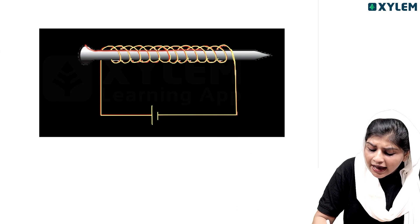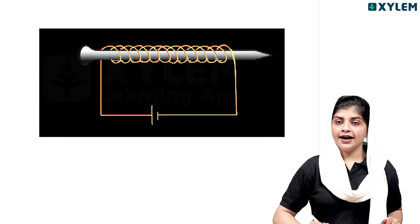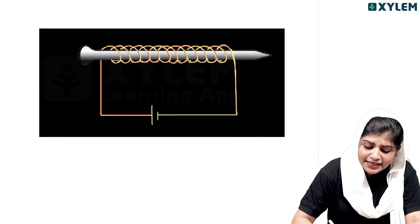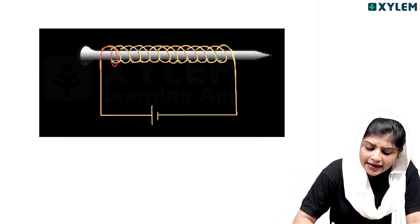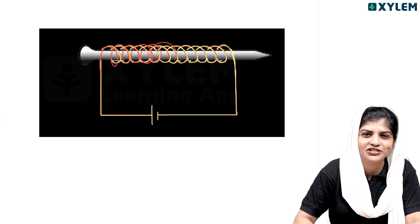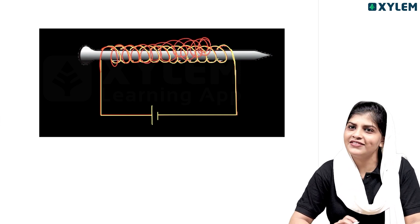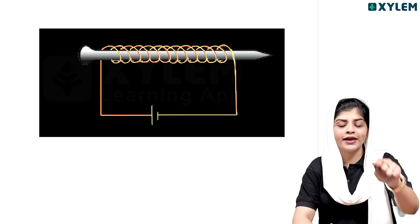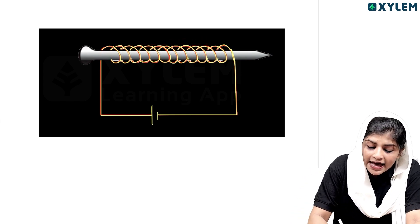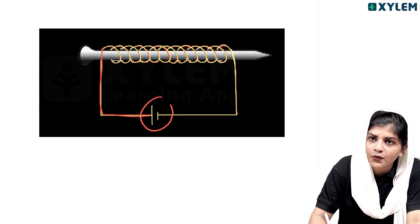This is an iron nail. This is a copper wire. We use the ends of this copper wire.